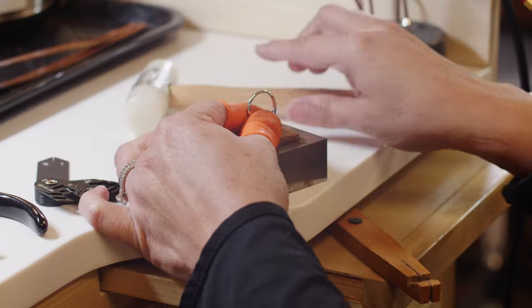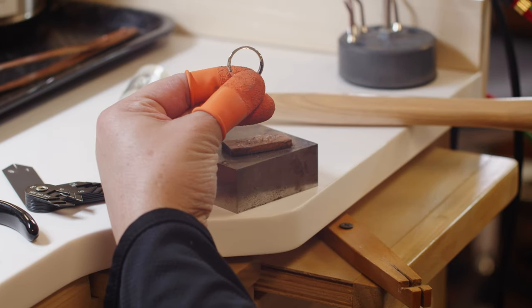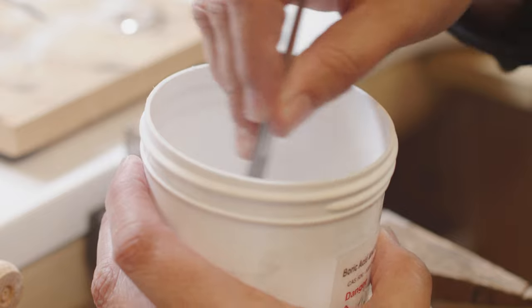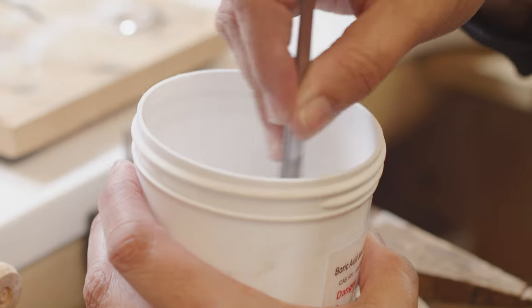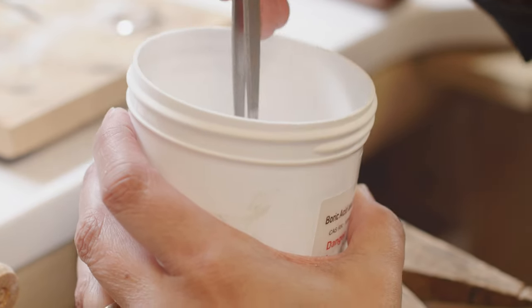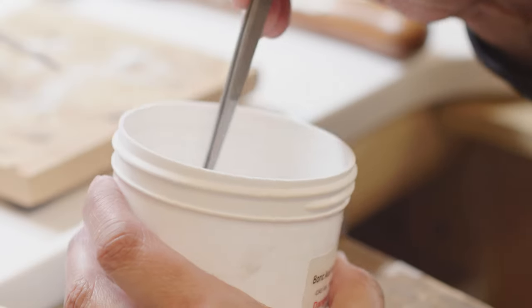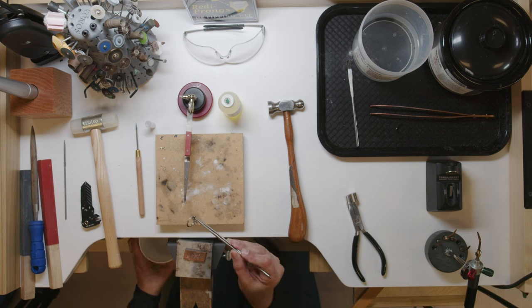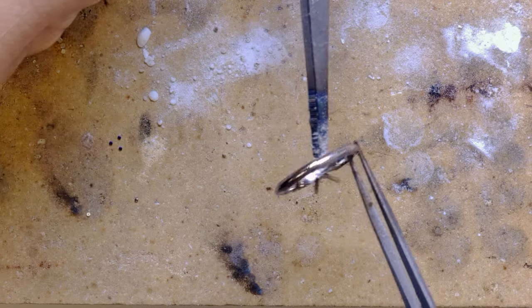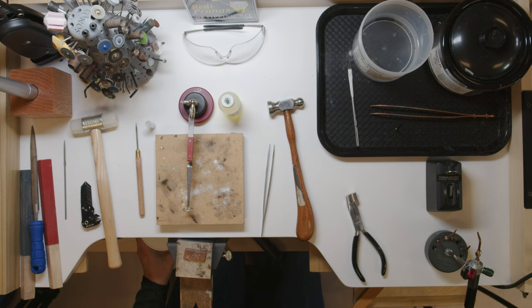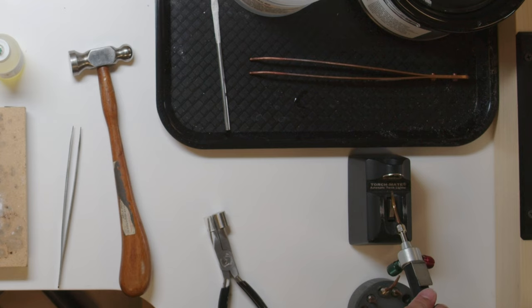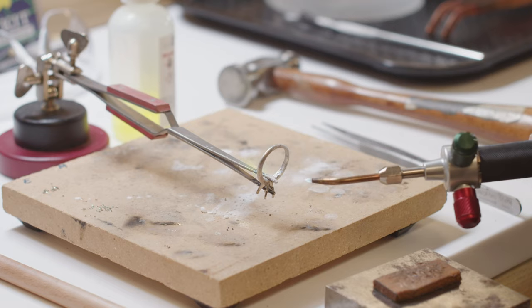There we go, gap's closed. You want to coat your piece in a boric acid and alcohol solution to prevent fire scale. Remember to stir the solution thoroughly because they tend to separate. Grab my ring, coat it, and place it in the soldering area. Light the torch.